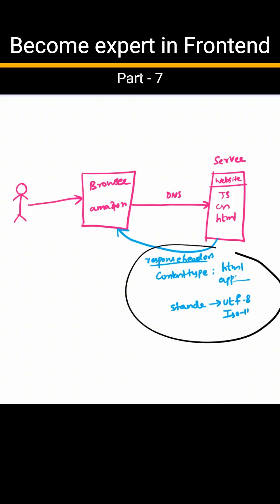Now let us say this server is not sending these response headers. What happens now? The browser will check the HTML file that was sent by this server. In that HTML file, it will check for the HTTP equivalent attribute. In that, it will check what the content type is and what the standard is that is used for encoding and decoding.